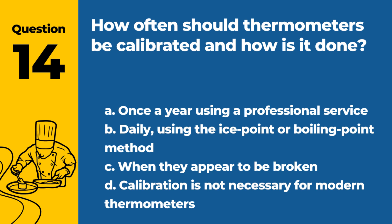Question 14. How often should thermometers be calibrated and how is it done? A. Once a year using a professional service. B. Daily using the ice point or boiling point method. C. When they appear to be broken. D. Calibration is not necessary for modern thermometers. Answer: B. Thermometers should be calibrated regularly using either the ice point or boiling point method to ensure accuracy.